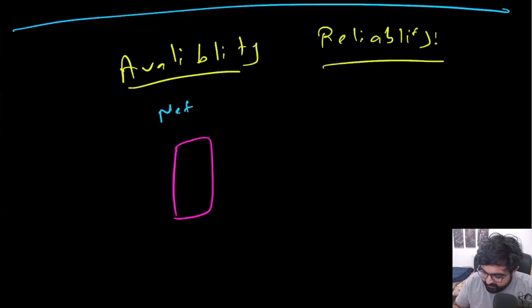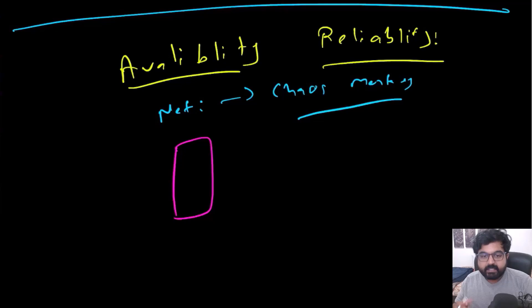Actually Netflix is pretty famous for creating something called a chaos monkey. And what chaos monkey does is that it tries to see or it tries to replicate how would Netflix behave in a chaotic situation or in a chaos situation.